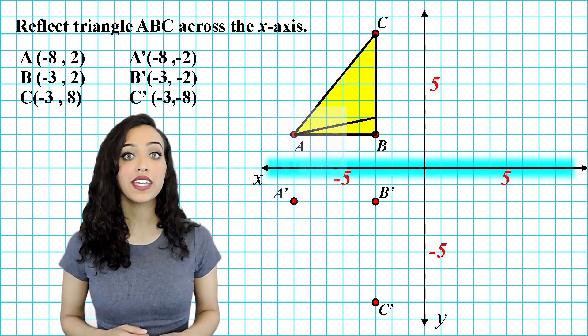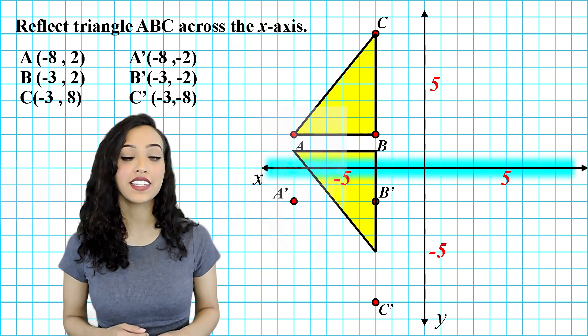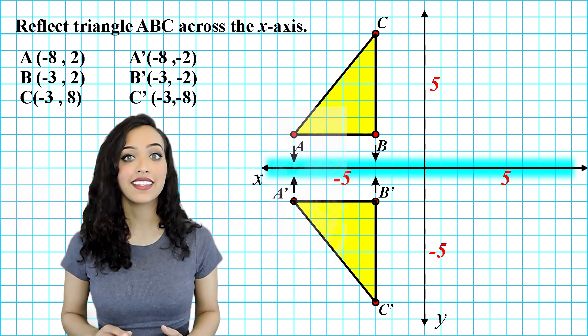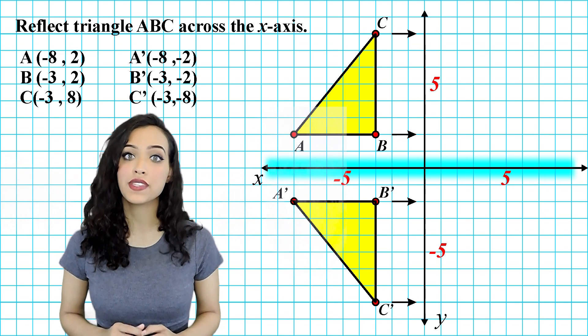Now that we have plotted our points, we can now see where our object will be reflected to. Notice how our x values stayed exactly the same and our y values are opposite values.